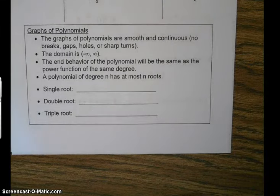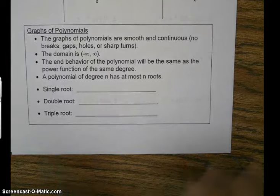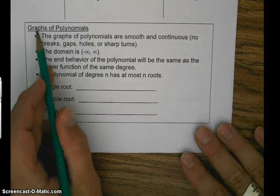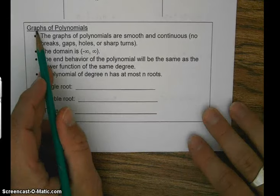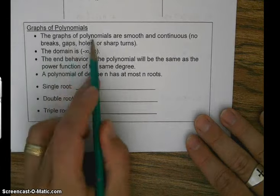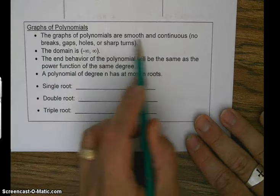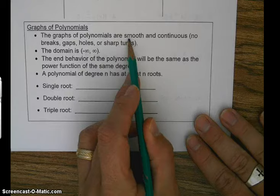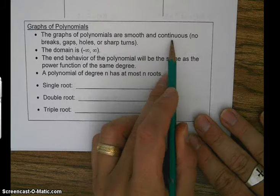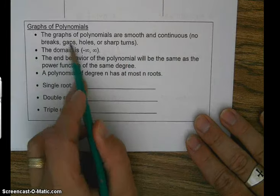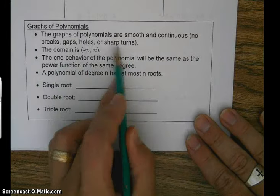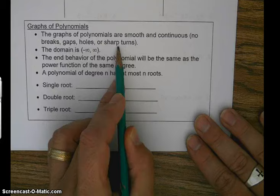Here's some information on polynomials. When you're looking at a graph, the graphs of polynomials are smooth and continuous. There's no breaks, gaps, holes, or sharp turns.